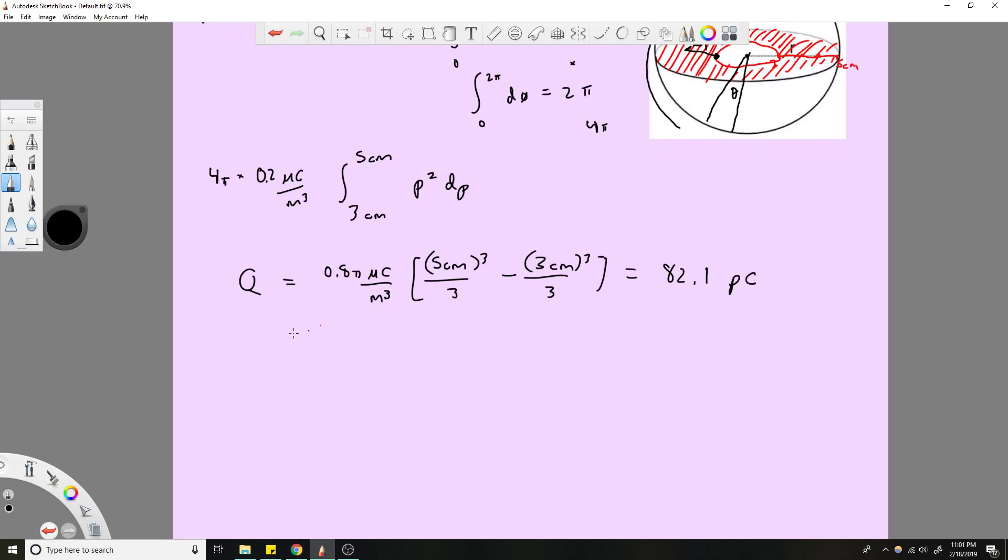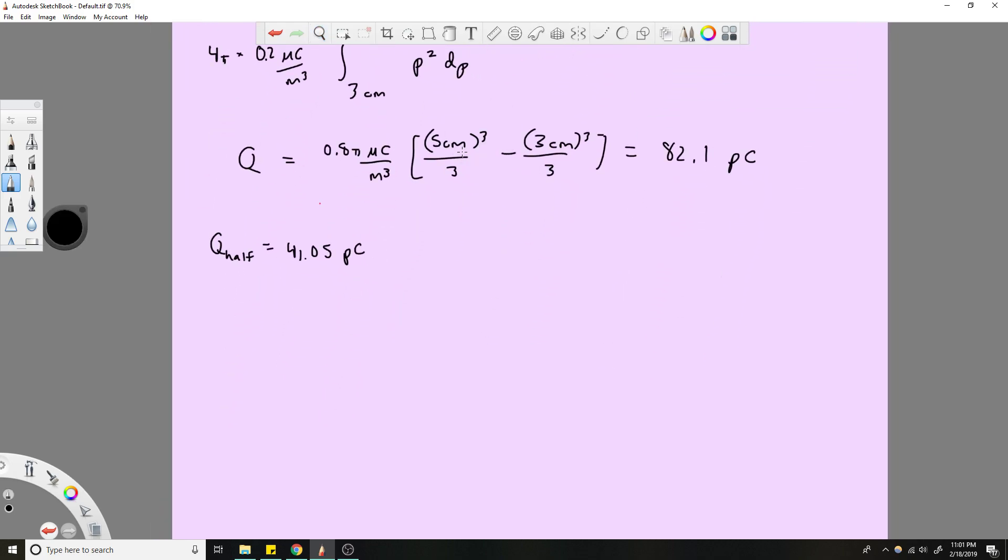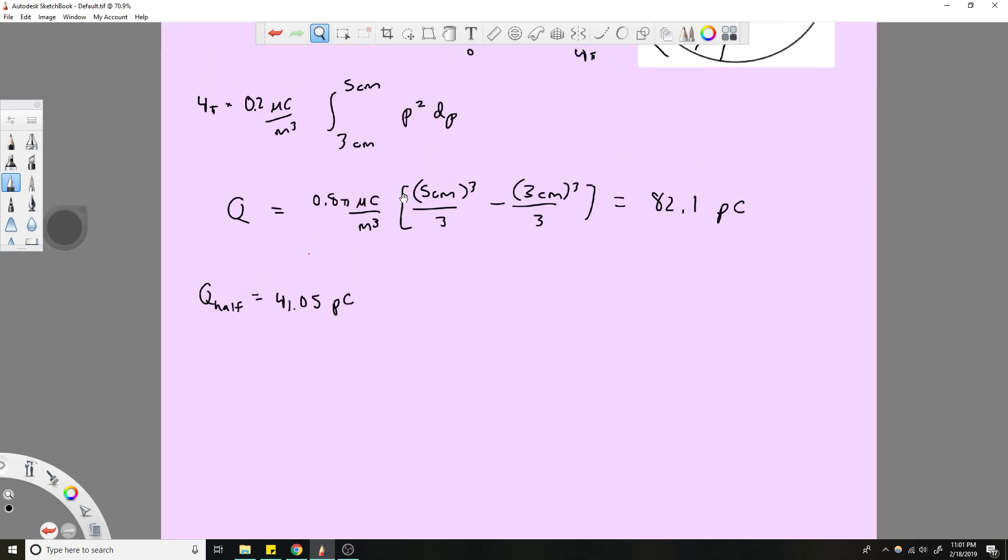What can we do? First find out half the charge. Q half equals half of this, which is 41.05 picocoulombs. We know what half the charge is, we want to know where that r1 value lies. So what do we do? We set an equation. We use this guy again, same. We could actually go all the way to this part right here. I'll just take this equation.